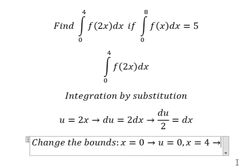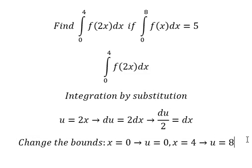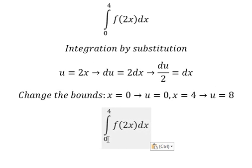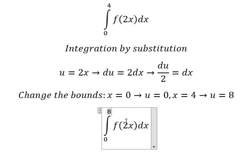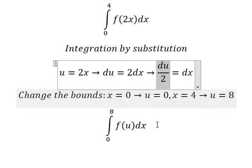When x equals to number four, we put number four in here, four times number two, we have number eight. So number zero we keep number zero, number four we change by number eight. Two x we change by u, dx we change by du over number two.